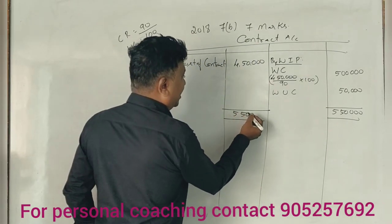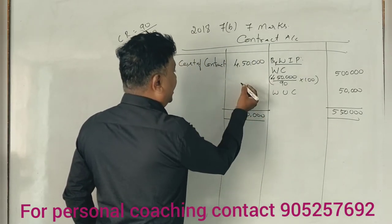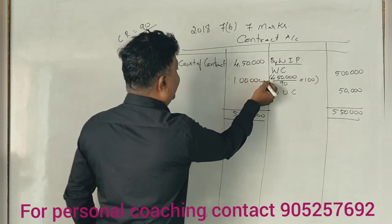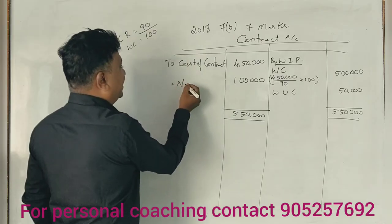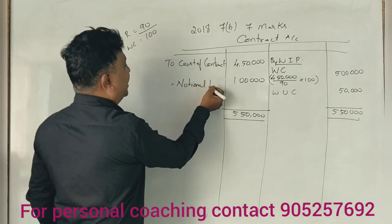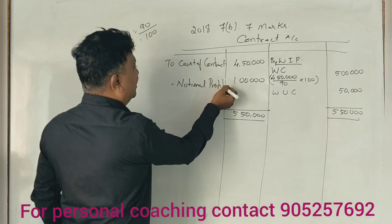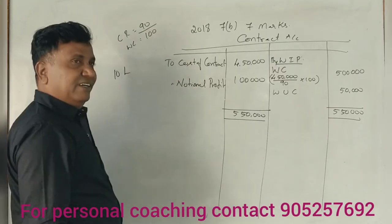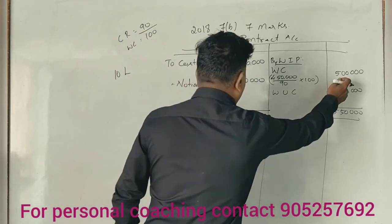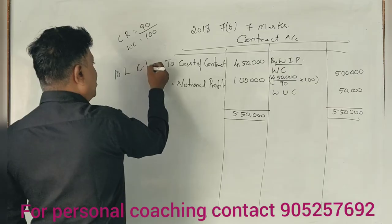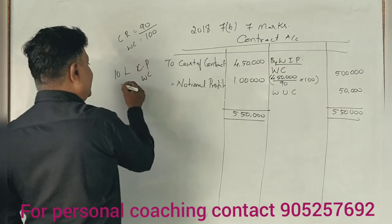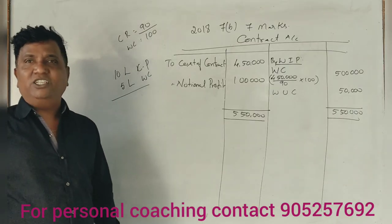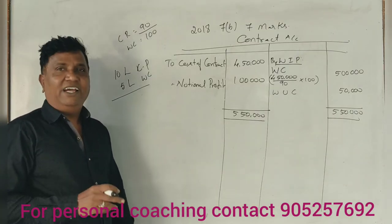So how do you get profit? Notional profit is 1 lakh. The contract price is 10 lakhs. Work certified is 5 lakhs — that is exactly 50% of the contract price.